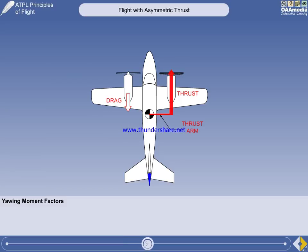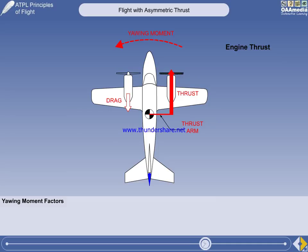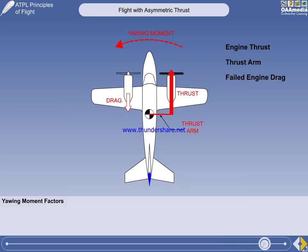The strength of the yawing moment will depend on three factors: how much thrust the engine is developing, depending on throttle setting and density altitude; the distance between the thrust line and the CG, the thrust arm; and the drag from the failed engine.